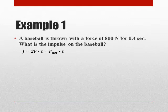Well the impulse, the letter J, actually denotes the symbol for impulse. Impulse equals net force times time. So we take the net force, which is 800 newtons, and multiply by time, which is 0.4 seconds. We get that the impulse is going to be 320 newton-seconds.